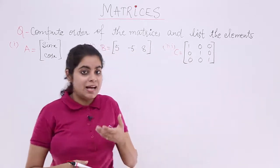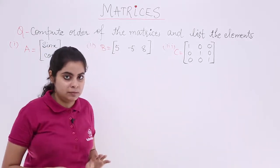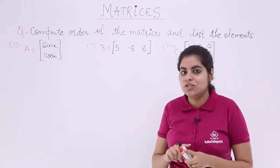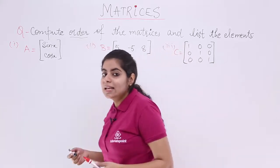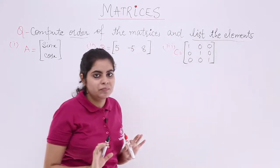The first matrix is named A, the second matrix is B, and the third matrix is named C. So we are supposed to find two things in the question: the first is the order, and the second is to list the elements.